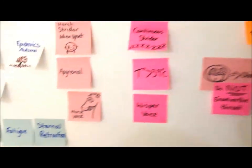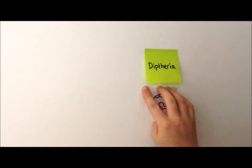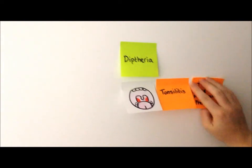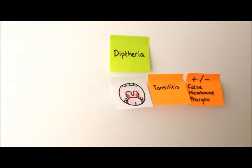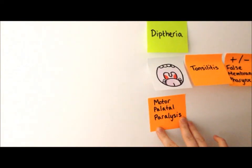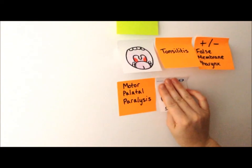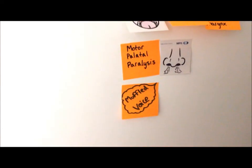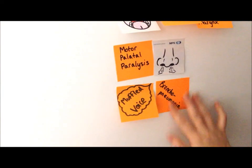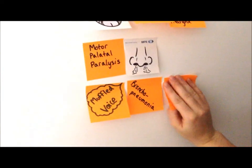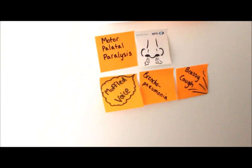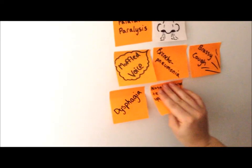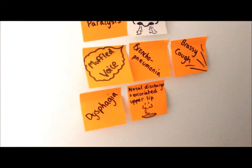Moving on to diphtheria. Diphtheria presents with tonsillitis plus or minus a false membrane over the pharynx. With this, you can get motor palatal paralysis, which means when they swallow fluids, some fluid can escape from the nose. There is usually a muffled voice. Bronchopneumonia can be experienced. There can be a brassy cough preceding any obstruction of the airways. Dysphagia is a common sign, and nasal discharge with an excoriated upper lip is associated with nasal diphtheria.